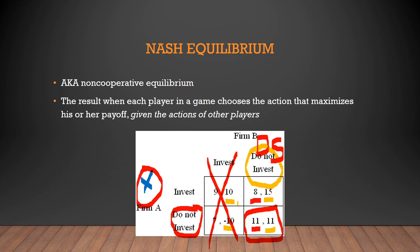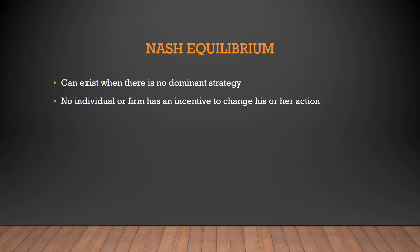Firm B has a dominant strategy — that's DS for dominant strategy. Firm A does not have a dominant strategy, but there is a Nash Equilibrium: neither investing, both earning 11, because Firm A knows that B has that dominant strategy. So given the action of Firm B, not investing is the best action for Firm A, and no player has an incentive to change their strategy.